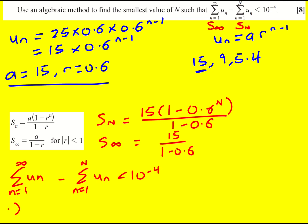So this implies that 37.5 minus, now I can still do 15 over 1 minus 0.6 here to get 37.5, so I can bring that out of the bracket. 37.5 times 1 minus 0.6 to the n is less than 10 to the minus 4.